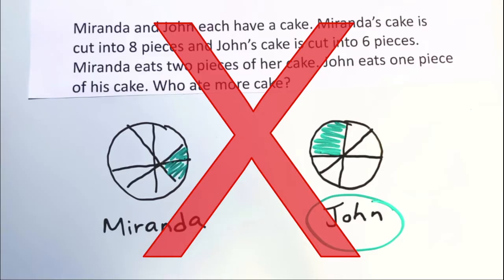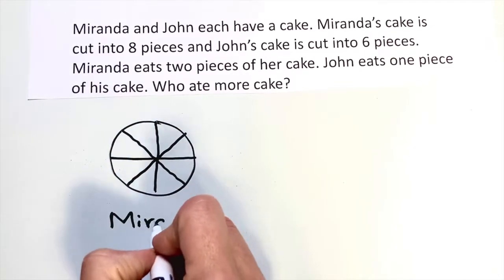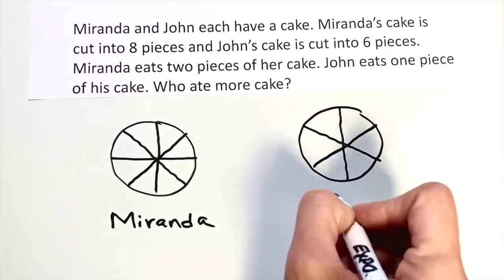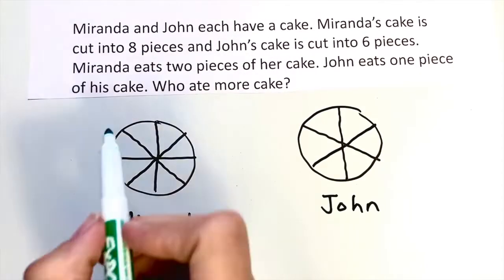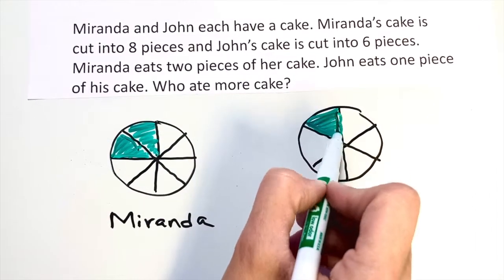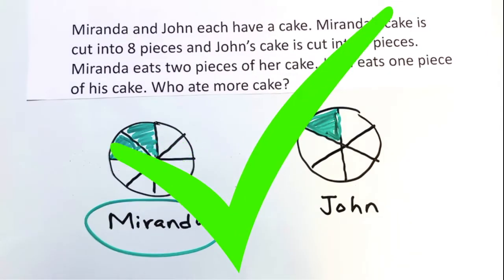Remember, when drawing fractions, all the pieces of the whole have to be the same size. Let's try that again. This time I'm going to divide Miranda's cake into eight even pieces and John's cake into six even pieces. Now when I color in two of Miranda's pieces and one of John's, I can see that Miranda actually ate more cake. In this video I'll show you how to draw fractions so that they can help you find the right answer and not the wrong answer.